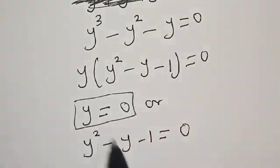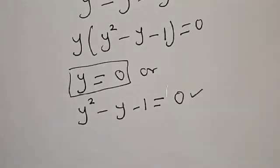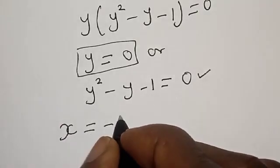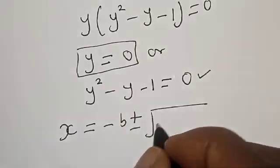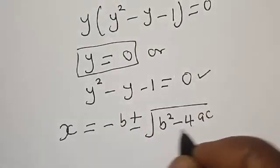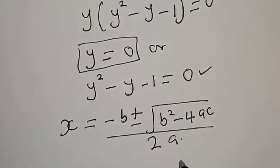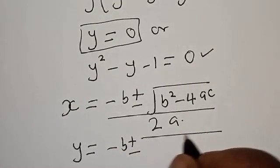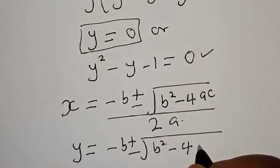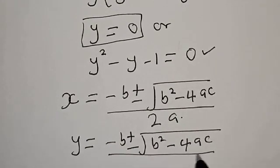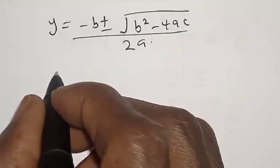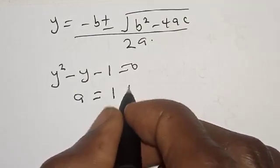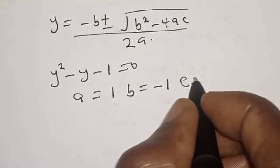We've found that y equals 0 is one solution. For the second case, y squared minus y minus 1 equals 0, this is a quadratic equation. We solve it using the quadratic formula: y equals negative b plus or minus square root of b squared minus 4ac, all over 2a. From our equation, a is equal to 1, b is equal to negative 1, and c is equal to negative 1.